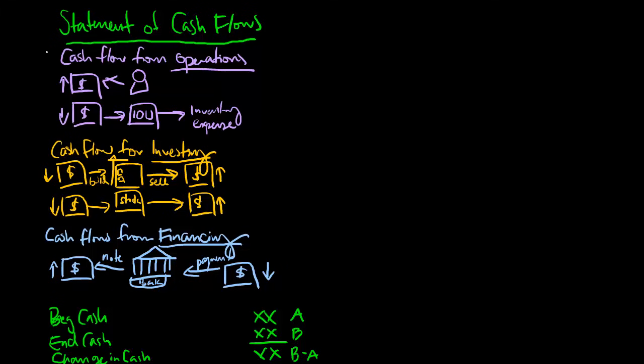So these are the three main sections: cash flows from operations, cash flows from investing, and cash flows from financing.